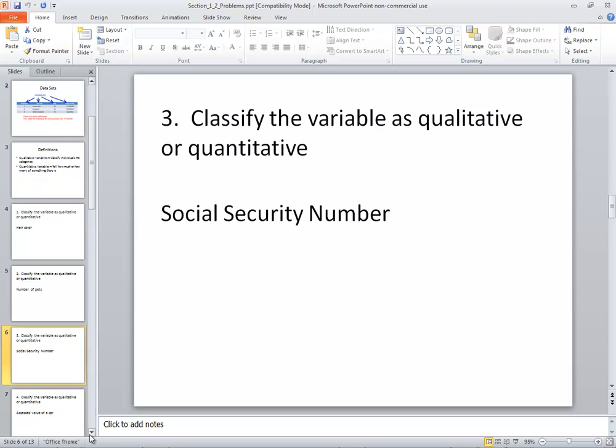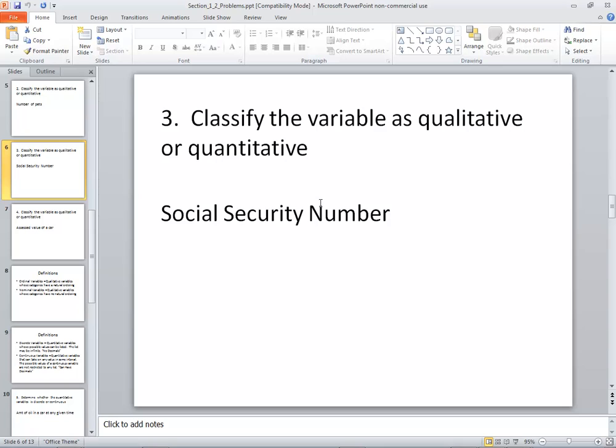Social security number. Well, think about it. It's a number. Does it count something? No, it doesn't. So this would be qualitative. It's not exactly a category either, but it's not a number that has any kind of meaning. And again, some of these aren't so clear cut. Another person might argue that it falls this way or that way. That social security number is one I pulled out of an old statistics book, and they describe it as qualitative. Assessed value of a car. Obviously that's a number that has meaning, so that would be quantitative.